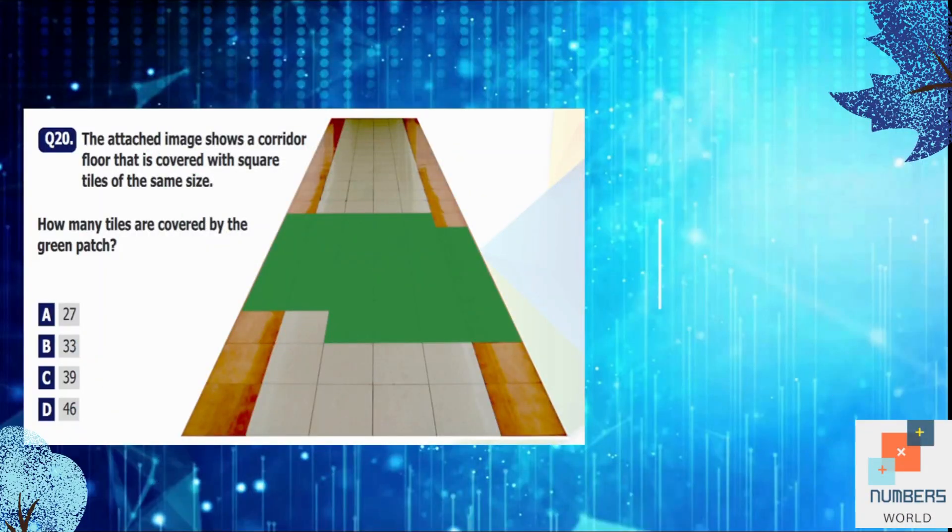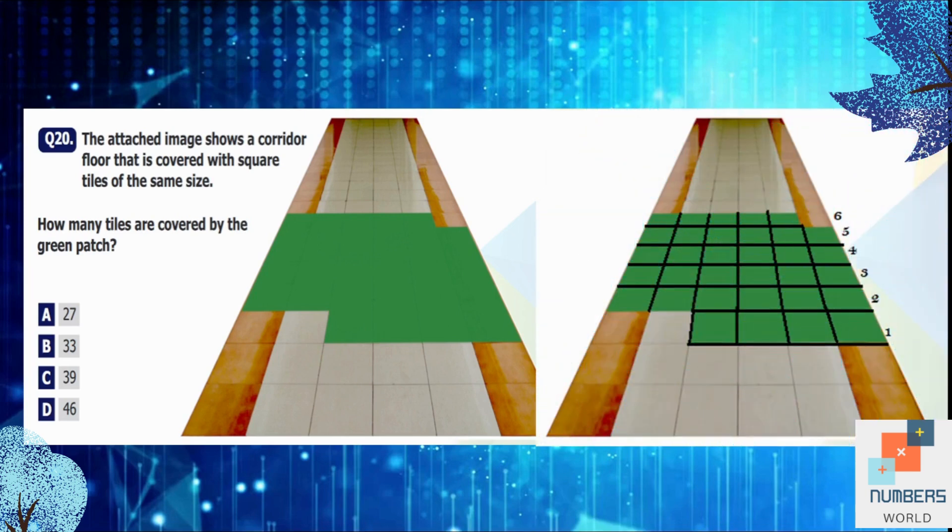Question number 20: The attached image shows a corridor floor that is covered with square tiles of the same size. How many tiles are covered by the green patch? So you can see that the size of the tiles in the front row is much more bigger as compared to the size of the tiles in the last row. It's gradually getting smaller. It's just because of the front view. If we see the same corridor from the top view, you'll notice that all the tiles are of same size. But due to the front view, we can see the difference between the size of the tiles. So now you can draw the lines and do the numbering. If you see the front row, the first row of the green patch, the size of it is bigger than the others and gradually its size is decreasing. So let's count the number of squares or number of tiles in the green patch. 1, 2, 3, 4, 5, 6, 7, 8, 9, 10. So till the end, there are 33 tiles. So option B is our answer.